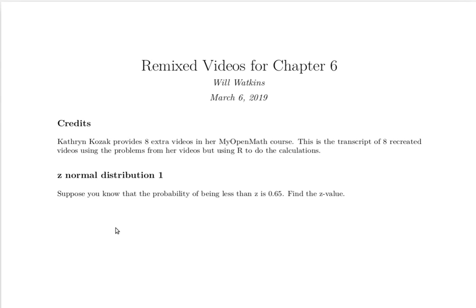Here's a problem proposed in one of Catherine Cossack's videos. Suppose you know that the probability of being less than Z is 0.65. Find the Z value.